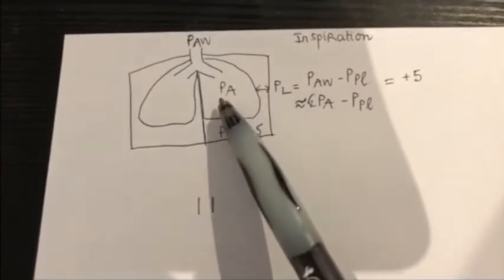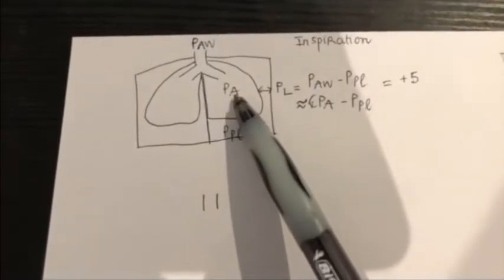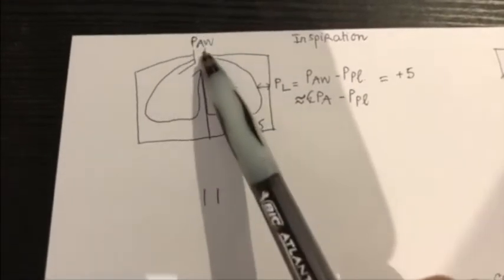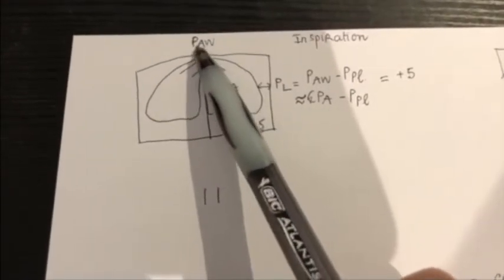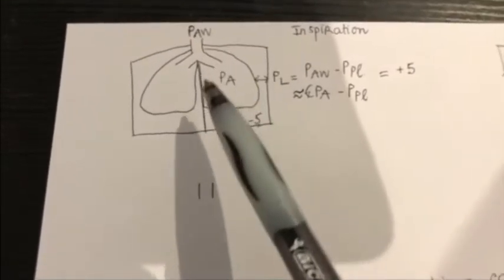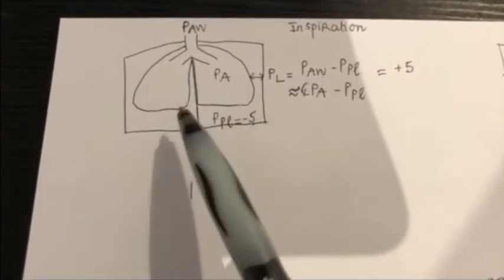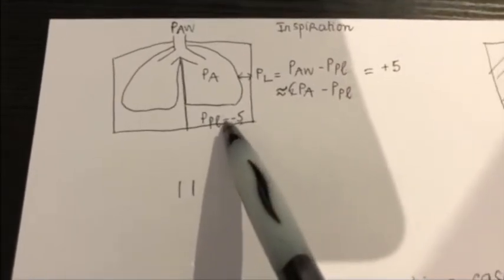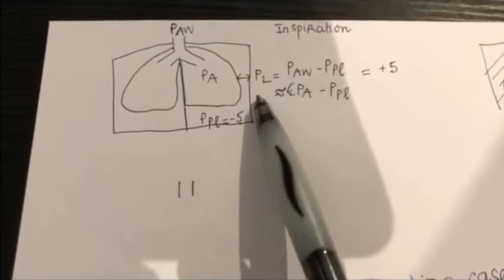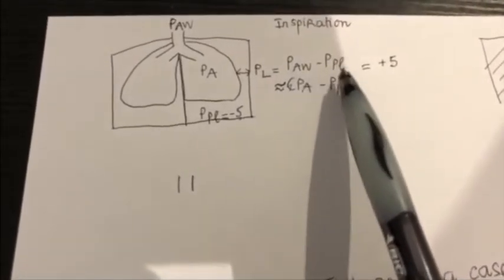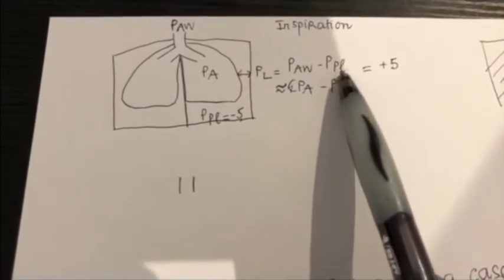Normally during inspiration, the alveolar pressure is similar to the airway pressure, and they're all about zero, which is also the atmospheric pressure. And the pleural pressure is always negative. And the transpulmonary pressure is equal to the airway pressure minus the pleural pressure.